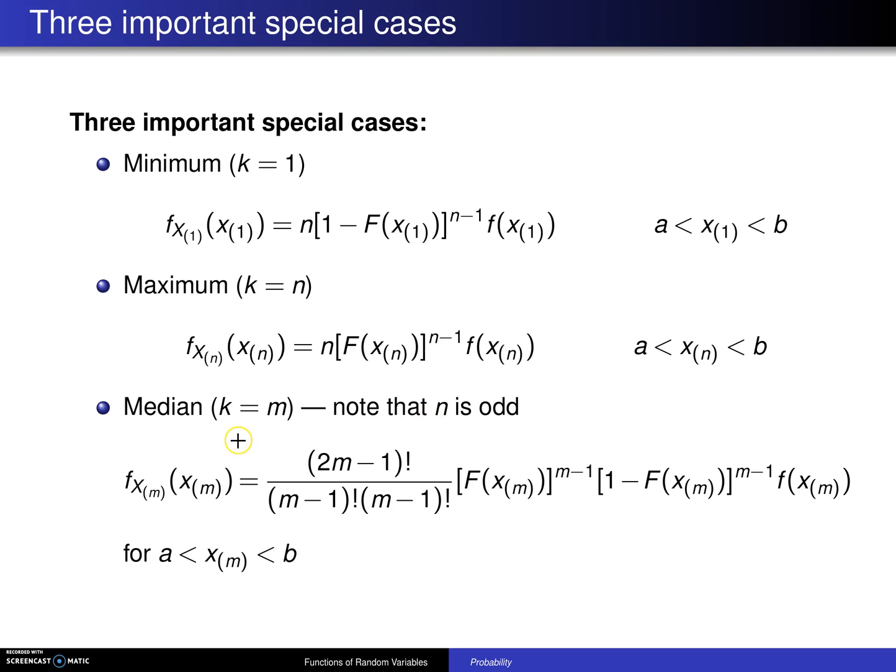when n is equal to five, then in that case, k is equal to three. So it's the middle of the five values, and so in this case,